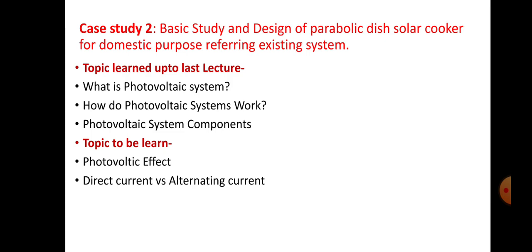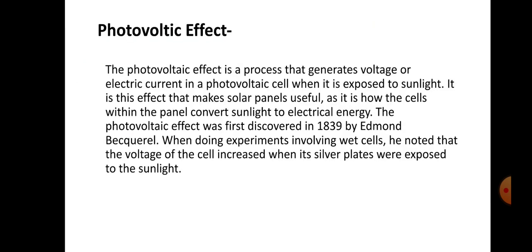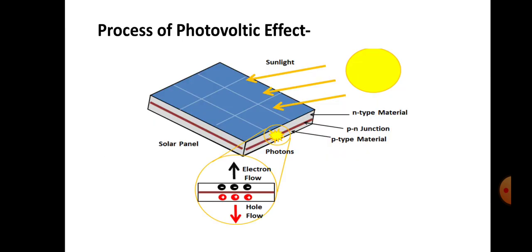In detail — before this I have explained the photovoltaic effect to you briefly, but in today's lecture we are going to see in detail what the photovoltaic effect is. Related to the photovoltaic effect, theory is given, but before that I want to show you one diagram so that you will easily understand how the photovoltaic effect happens. The diagram is titled 'Process of Photovoltaic Effect'.